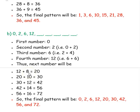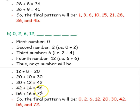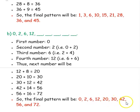We have added 8, so next we add 10: 20 plus 10 is 30. After 10 we add 12: 30 plus 12 is 42. Then 42 plus 14 is 56. After 14 we add 16: 56 plus 16 is 72. So the final pattern will be 0, 2, 6, 12, 20, 30, 42, 56, and 72.